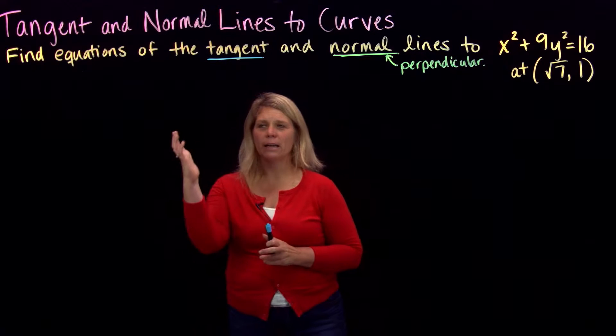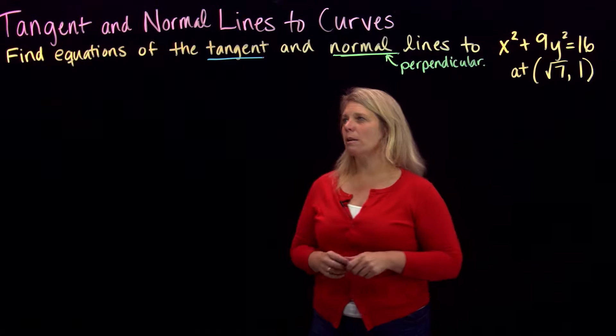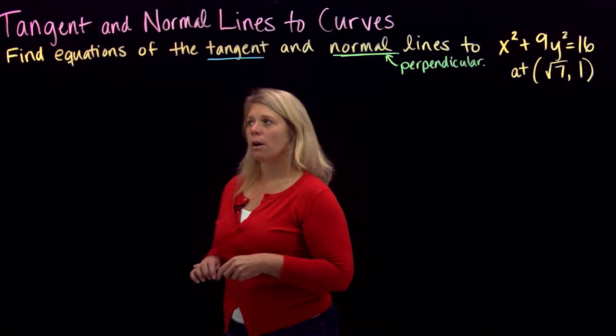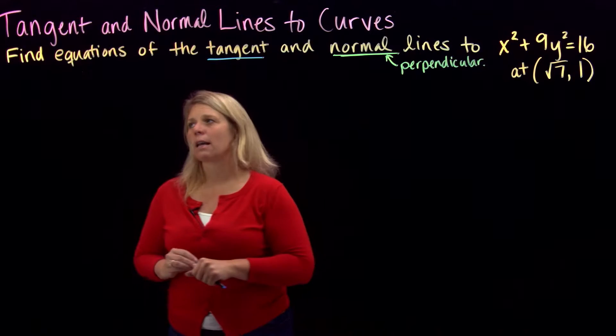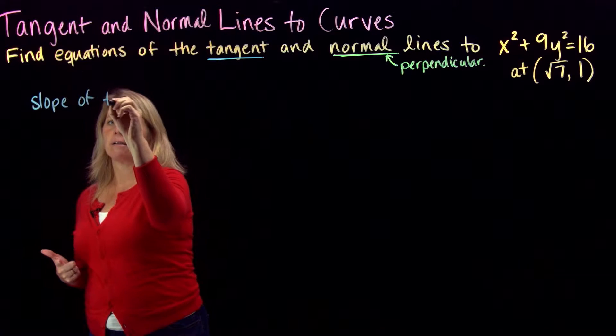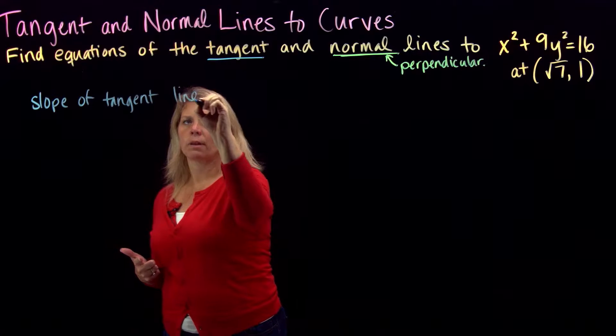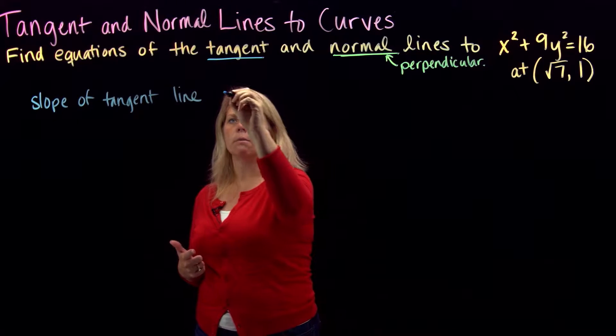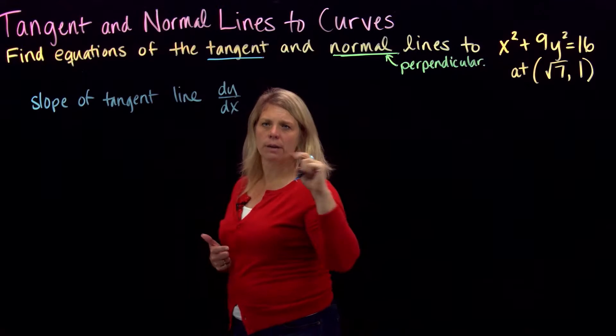Okay, we're going to look at another example of finding equations of tangent and normal lines to a curve at a particular point. So just like before, we know that to find the equation of a tangent line to a curve, we're going to use the idea that the slope of the tangent line is the derivative, dy dx, at the point we're interested in here.